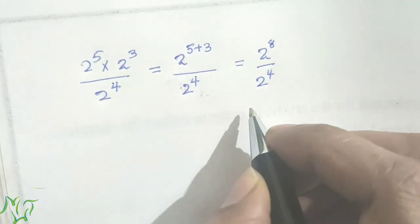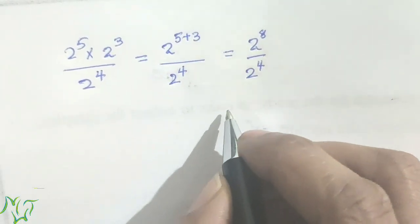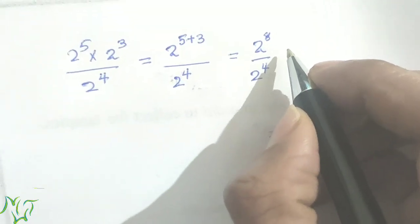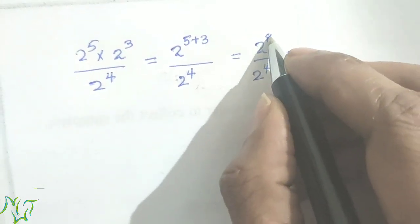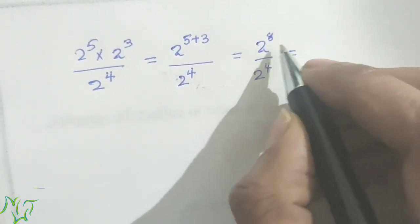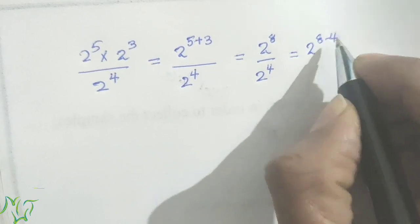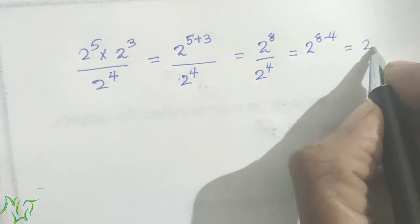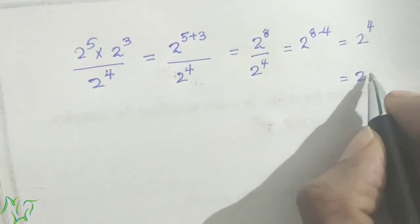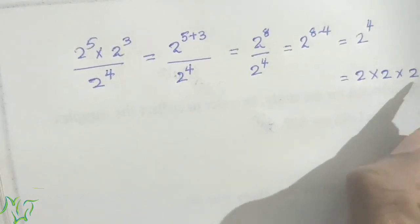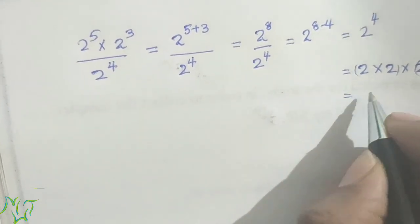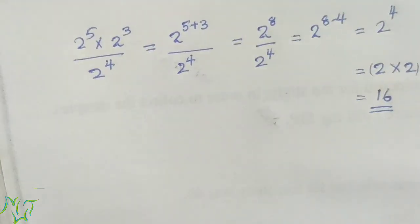Now we can use the division rule. There are two division rules. Here the power is bigger in the numerator, so we use the first rule: 2 raised to 8 minus 4, which equals 2 raised to 4. To simplify, 2 into 2 into 2 into 2 — that is 2 into 2 is 4, next 2 into 2 is 4, so 4 into 4 is 16.